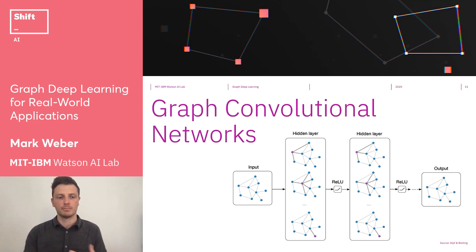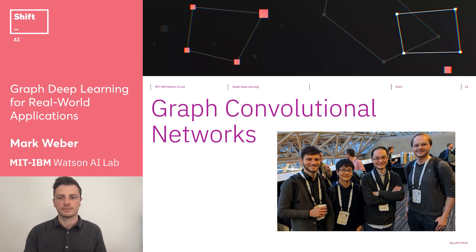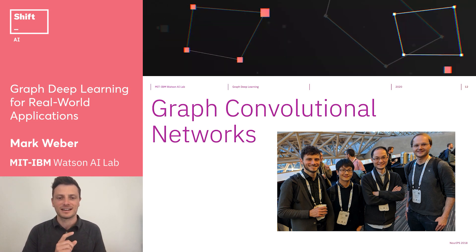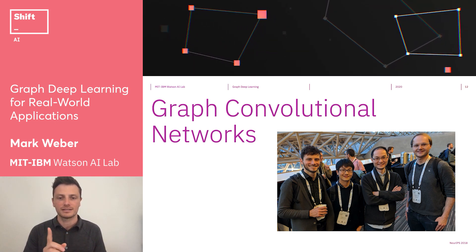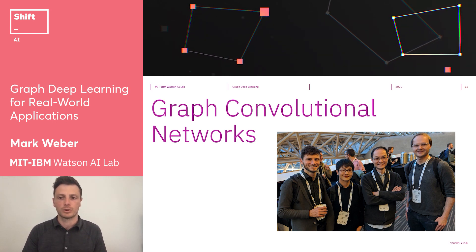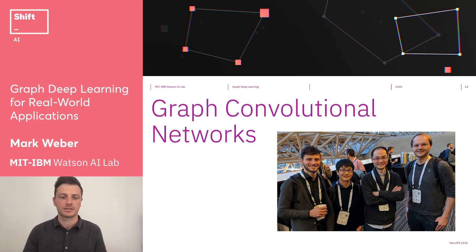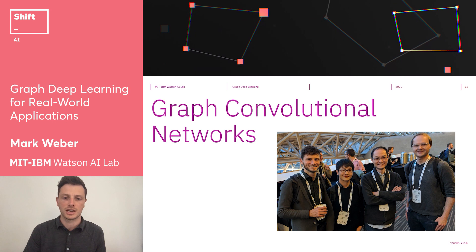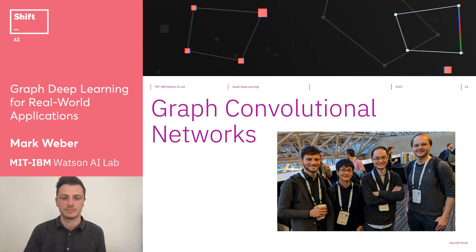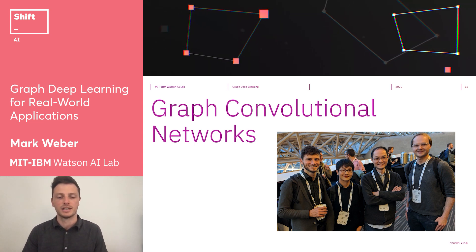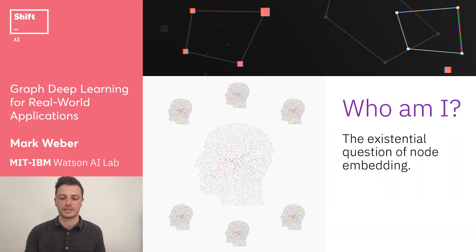And this is what we call node embedding. This is Thomas Kipf on the right, who published a very important paper on graph convolutional networks. The following year in the same conference, ICLR, my colleagues Jia Chen and Tangfei Ma published a new method called fast GCN, which was an important scalability step forward for this model architecture.